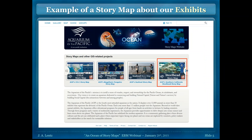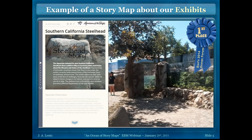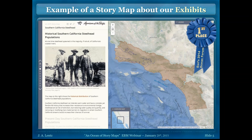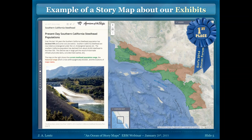We also have our Southern California steelhead story map, designed to give more information about the exhibit as well as the animal. This story map actually won first place at the Oceans Forum in 2014. It uses the map journal story interface — the same template as the shark story map Don showed earlier. As you go through, you find out about our exhibit, then get detailed information about Southern California steelhead and the problems they're facing. It walks you through their history, including a map showing the historical distribution of Southern California steelhead.